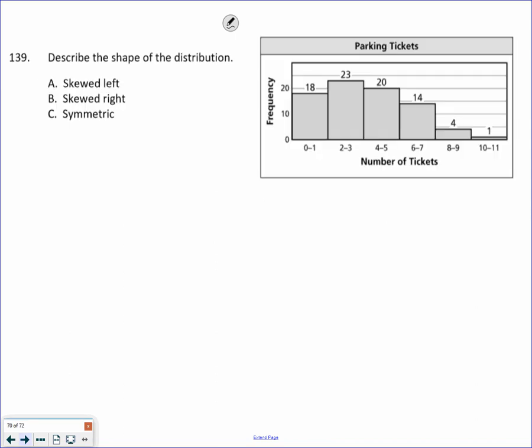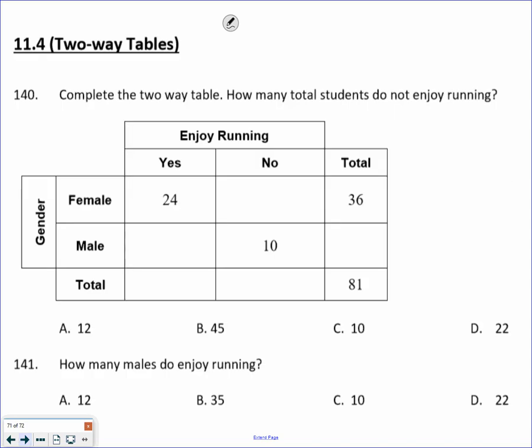Describe the shape again — it's skewed right. One more time: most of the data is on the left, making it skewed to the right.